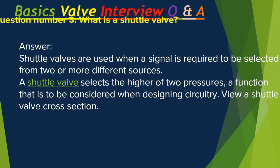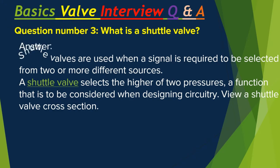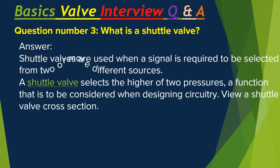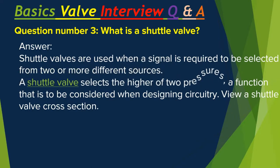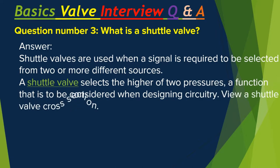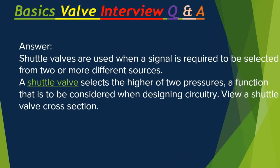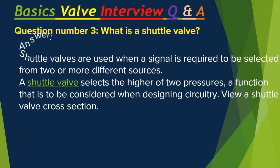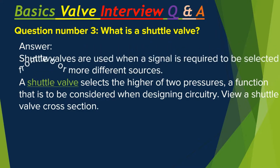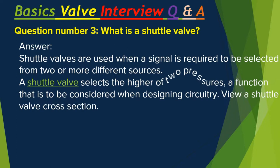Question number three: What is a Shuttle Valve? Shuttle Valves are used when a signal is required to be selected from two or more different sources. Also known as R-Valves, they allow a signal to pass through from either input A or B, or both, and will allow the reverse flow of system exhaust through these same inputs. A Shuttle Valve selects the higher of two pressures, a function that is to be considered when designing circuitry.